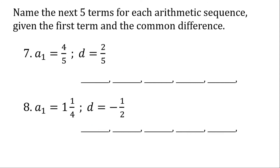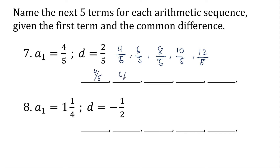For number seven, let's work with unsimplified fractions. We have four over five plus two over five, which is six over five. Six over five plus two over five is eight over five. Eight over five plus two over five is ten over five. Ten over five plus two over five is twelve over five. Simplified: four-fifths, six-fifths, eight-fifths, two, and two and two-fifths.